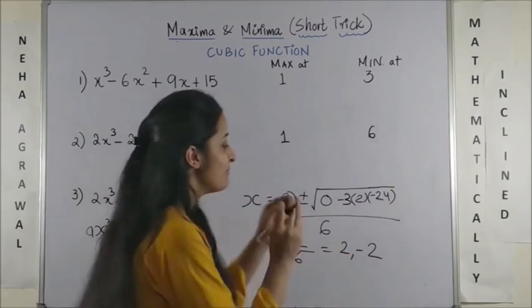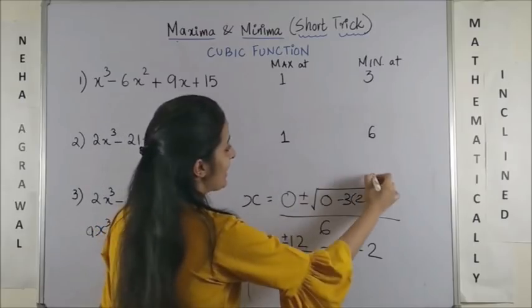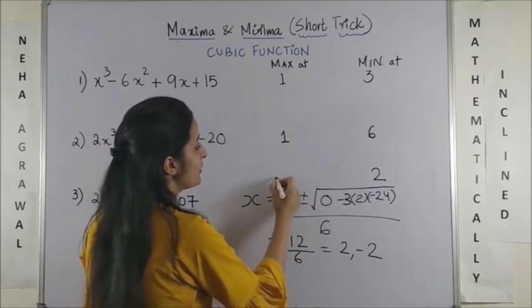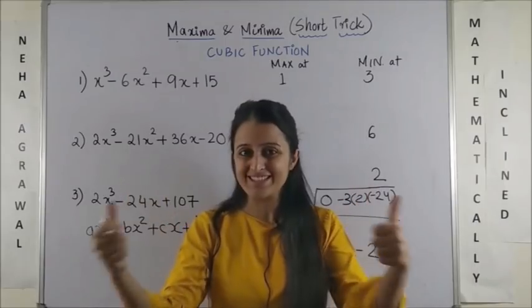So, plus minus 12 by 6 that gives you 2 or minus 2. Now, of course, your minimum would happen at 2 and your maximum would occur at minus 2. Super easy.